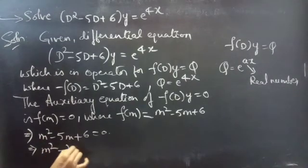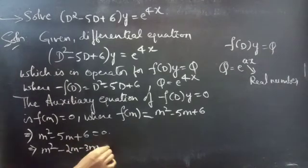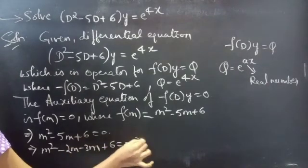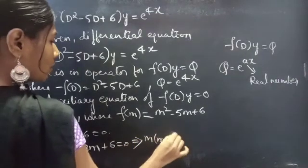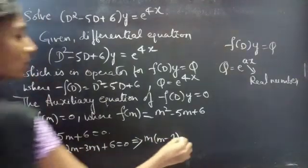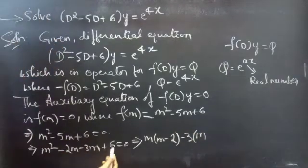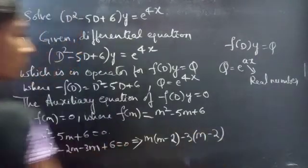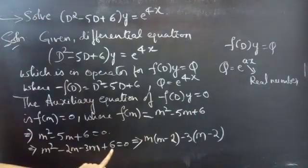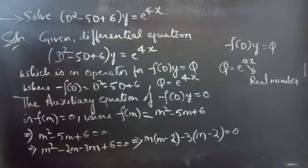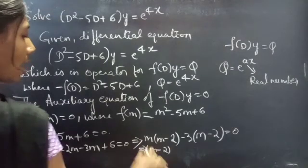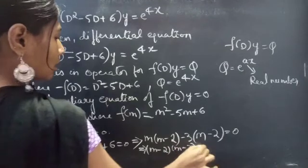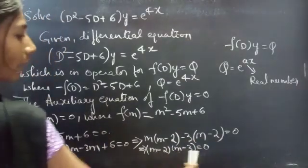To factor m² - 5m + 6 = 0, we split -5m as -2m - 3m, giving m² - 2m - 3m + 6 = 0. Taking m common from the first two terms gives m(m - 2), and taking -3 common from the last two terms gives -3(m - 2), since -3 × m = -3m and -3 × (-2) = +6.